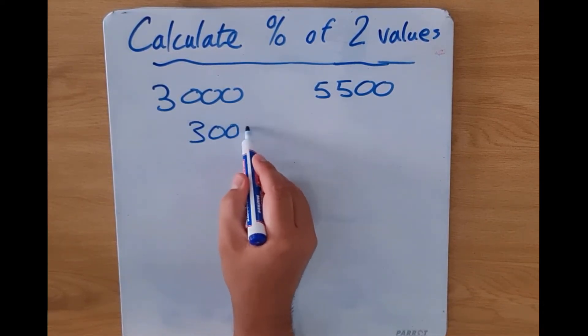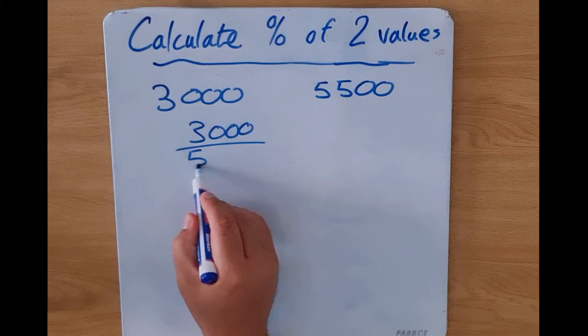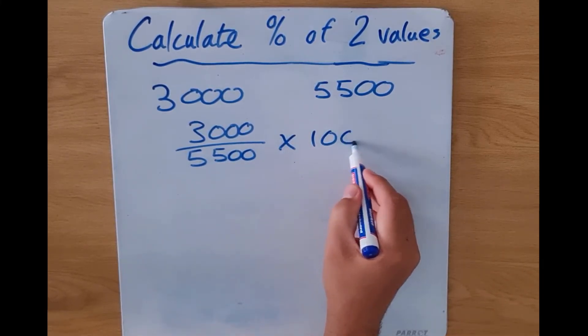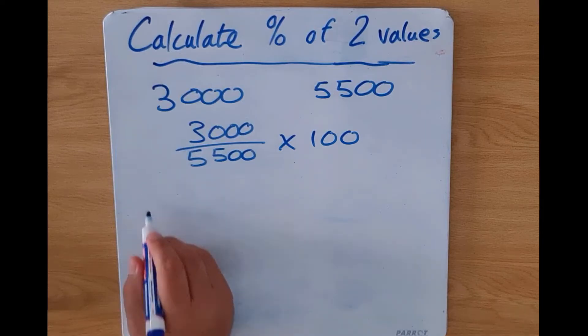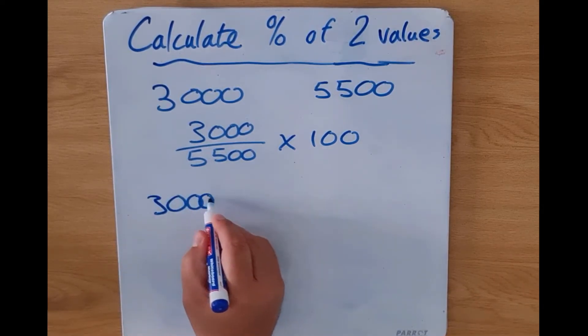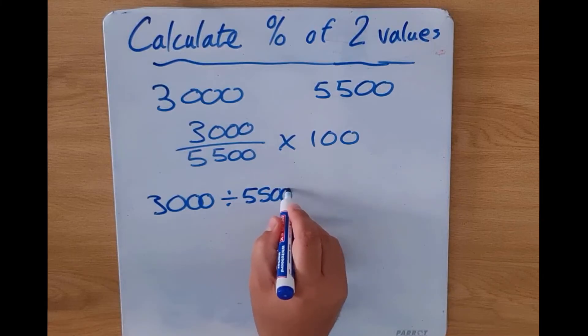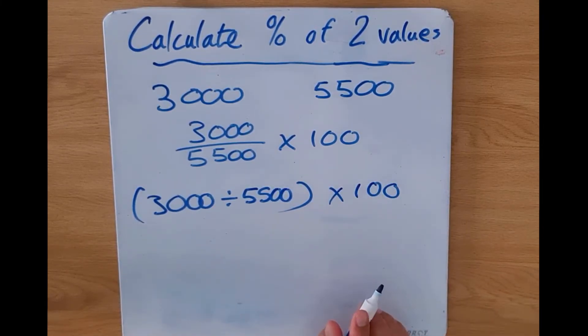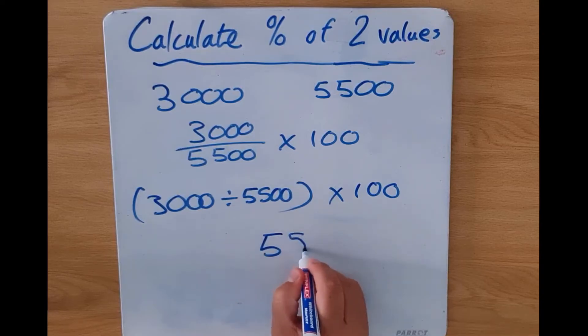So we're going to take our 3000, we're going to divide that by 5500, and we're going to multiply that by 100. Again guys, it's a case of 3000 divided by 5500, and whatever that answer is we'll multiply that by 100, and what we'll end up with is an answer of 55 percent.